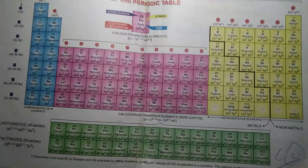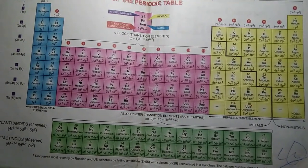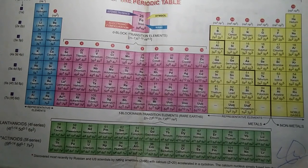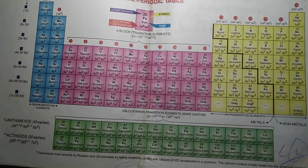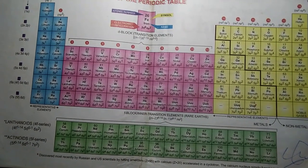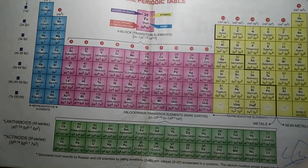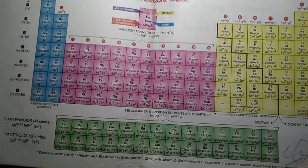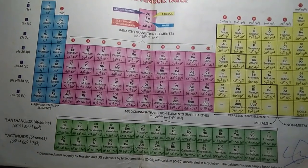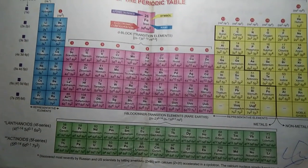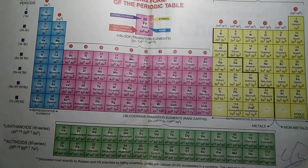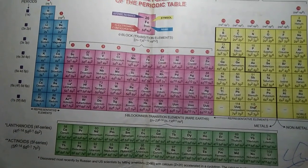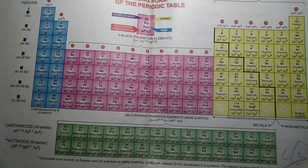For group 16, you can use 'usse tepo' — usse meaning oxygen and sulfur, se for selenium, te for tellurium, and po for polonium. This is very easy to remember.